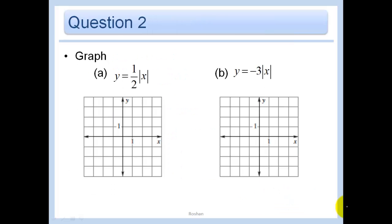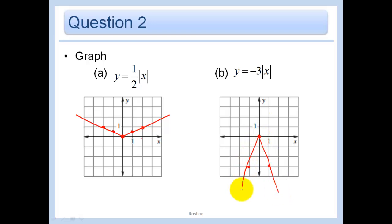Let's graph y equals one half the absolute value of x. We start with our vertex at (0,0). Instead of plotting (1,1) like our parent function, we're now going to plot (1, 1/2). And instead of plotting (2,2), we're going to plot (2,1). We can see that it got wider — compressed. This negative sign means we reflect it down and it will elongate — it's going to be stretched out. When we put in a 1, we get out a negative 3, so you can see it is getting longer.